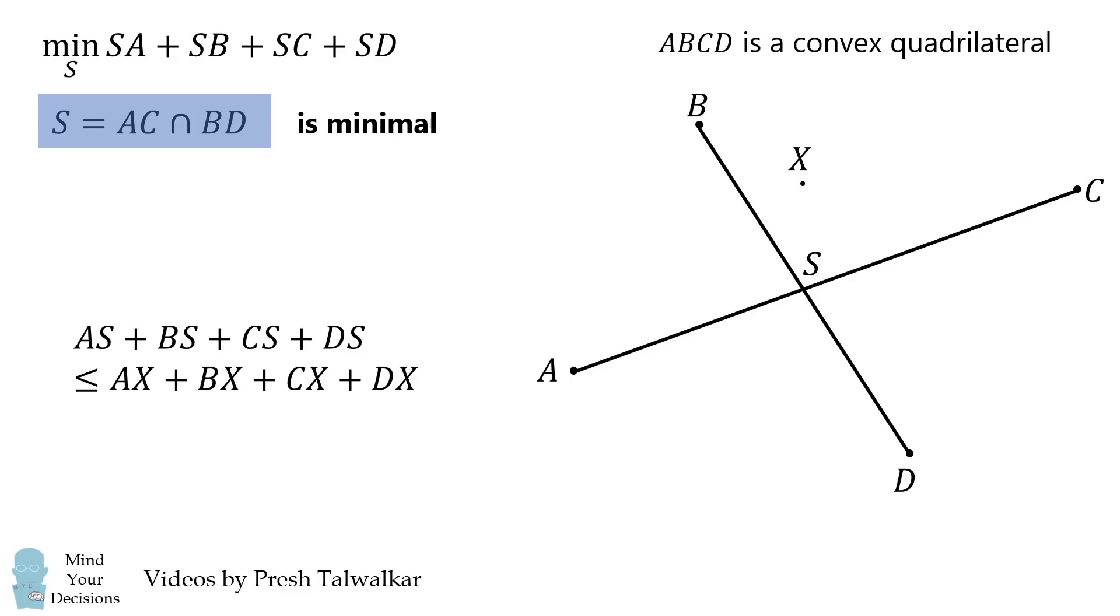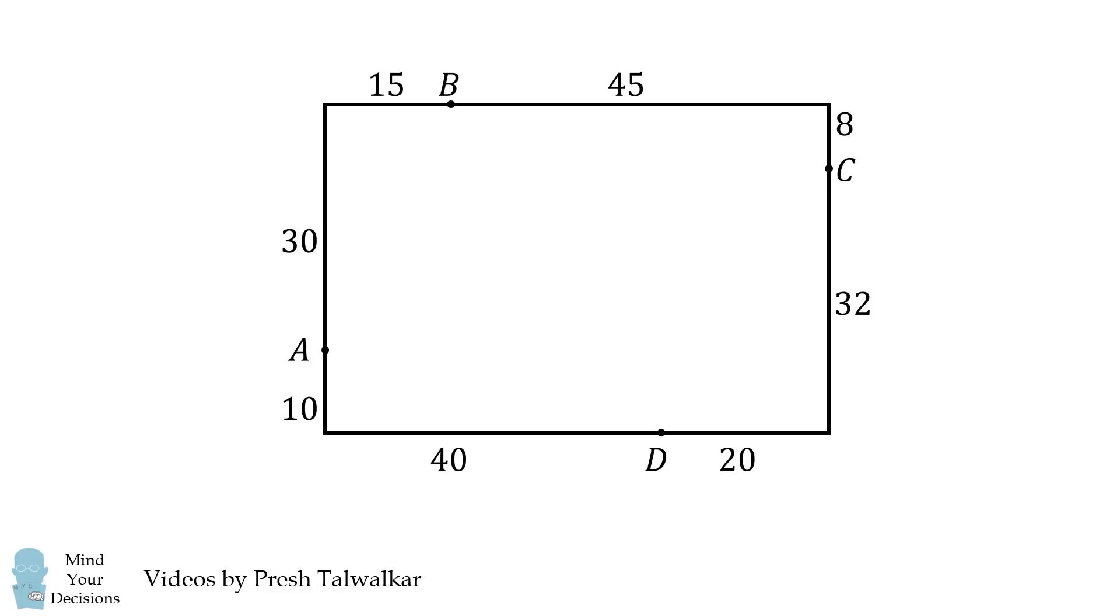Let's use this result to solve the problem. We will first determine where S is by connecting AC and BD. Their intersection point will be S. From here, we need to calculate AS + SC + BS + SD.